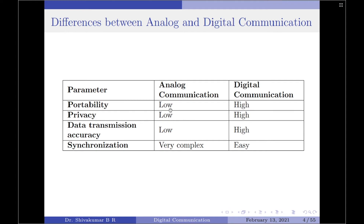Coming to privacy, analog communication systems fail to provide high privacy and therefore they provide low privacy. On the other hand, digital communication systems provide quite high privacy. Since the privacy for analog communication systems is low, the security is quite low, whereas for digital communication the security is quite high.